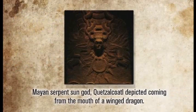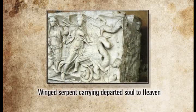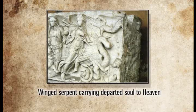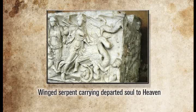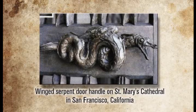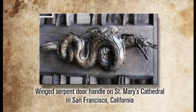Here the Mayan serpent sun god Quetzalcoatl is depicted coming from the mouth of a winged dragon. Here we have a winged serpent carrying departed souls toward what is interpreted as heaven. I'm going to suggest it's not heaven he's going to. Here you see that very same winged serpent — found for thousands of years in paganism — on the door handle of St. Mary's Cathedral in San Francisco, California. What on earth is a winged serpent doing on any religious building supposed to be connected to serving the Lord Jesus Christ?